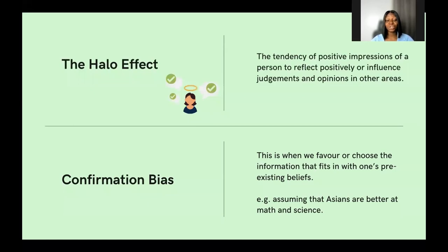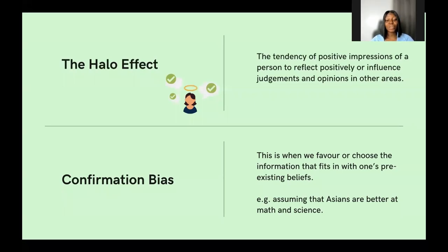The halo effect is a type of bias where we tend to favor and treat people positively based on the positive impression we have about them. As the saying goes, the more you look, the less you see — because you've heard so many good things about someone, your judgment of them is often based on those good things, regardless of any negative impressions. The opposing type is the horn effect, where we assume negative things about a person or group because of the negative things we've heard about them.